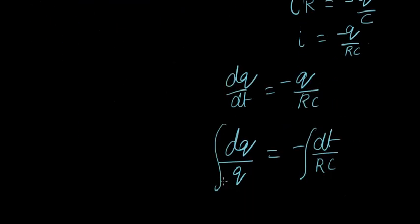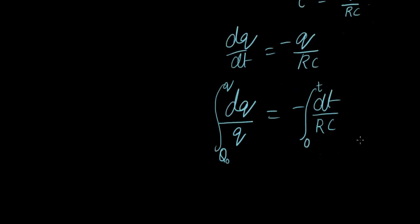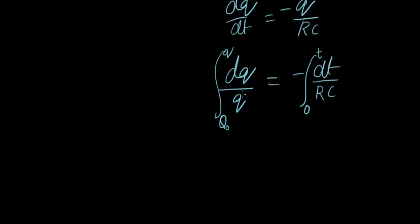So this, while discharging, goes from Q0 to some small value Q. And here, start from zero time to time T. And as we did before, just put little prime signs on these just because we want different variables while integrating.